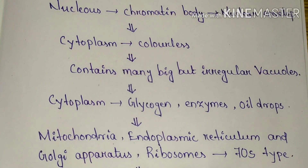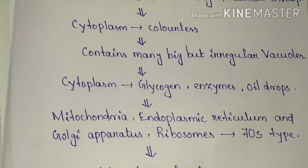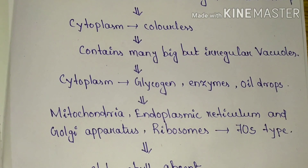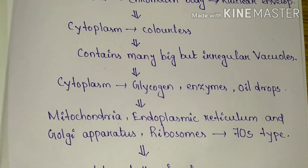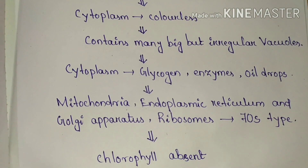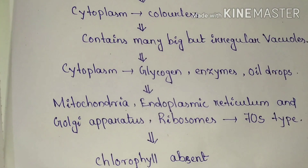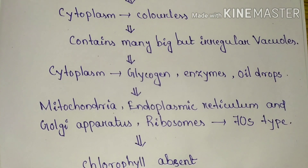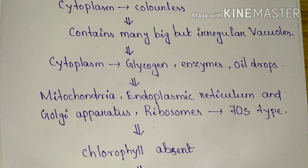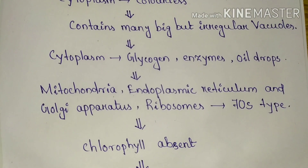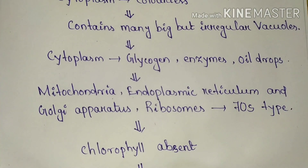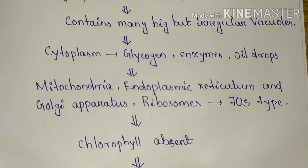In fungal cells, various irregular vacuoles are present, and in higher fungi a centrally placed large vacuole is present. The cytoplasm of the fungus contains glycogen, enzymes, and oil drops. Glycogen and oil drops serve as the reserve food material for fungi. Since fungi are eukaryotic cells, they contain various membrane-bound organelles.